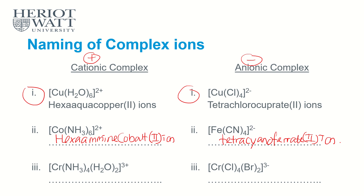What if you have more than one type of ligand? Let's look at example 3: we have ammine and aqua. When there are different ligands, we name them in alphabetical order. Ammine comes before aqua alphabetically, so: tetra-ammine di-aqua. The metal is positive, so it stays as chromium. The full name is tetra-ammine di-aqua chromium(III).